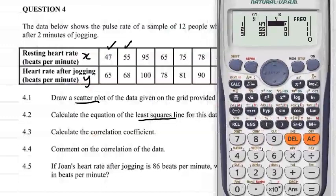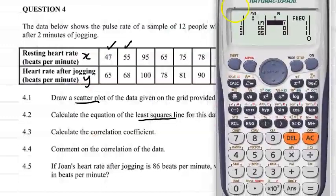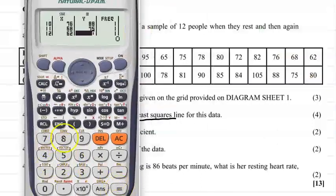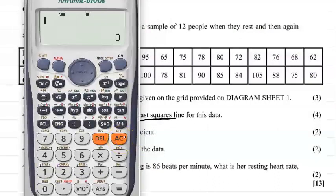Then I come back and then I put in all the y values. Now the reason I do this is I can double check that all my information is correct. So now I'm going to put in all the y values, so 47 and the y value 65.